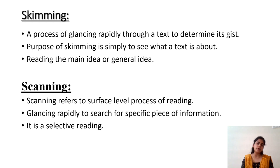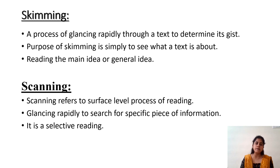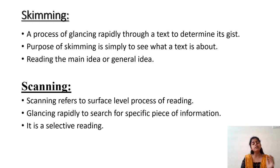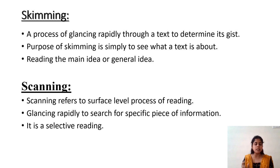Whereas scanning is even quicker. The reader's eyes scan only for keywords. For example, when a newspaper publishes the date of a result, the news contains many details — how many students appeared for the examination, how many male and female students, the courses they appeared for. Despite all that information, students are eager to know only the date of publication. Their eyes scan only for the number, the date — the specific information. The specific information here is the date of publication of the result. This is known as scanning.